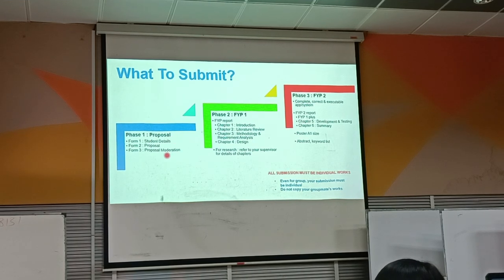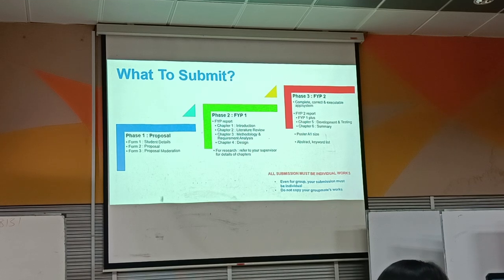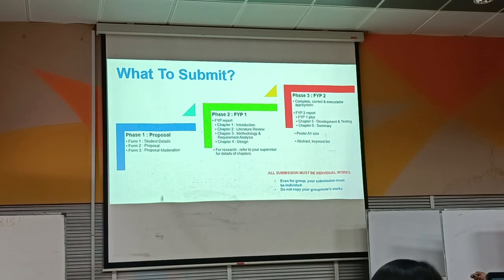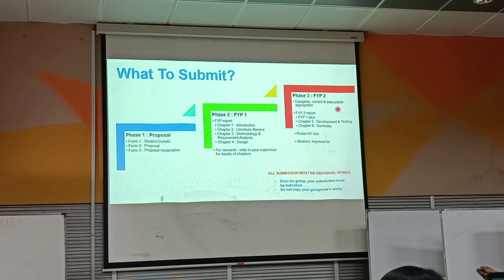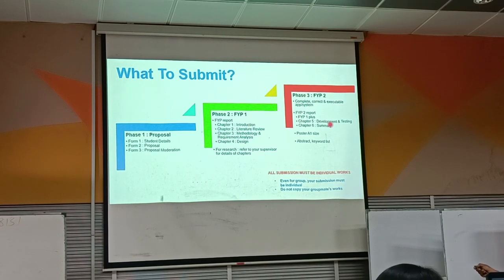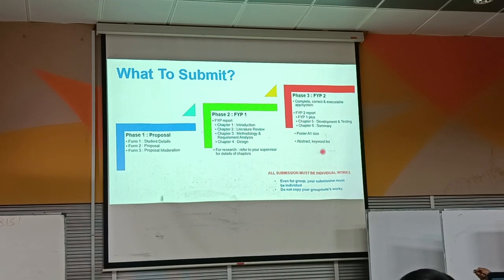For what to submit: phase one requires Form 1 (student details), Form 2 (your proposal), and Form 3 (proposal moderation form). Phase two requires the FYP report chapters one to four. Phase three requires the complete system, the FYP 2 report (which is FYP 1 report plus two or three more chapters depending on your supervisor), one poster, and an abstract with keyword list document. All documents are individually submitted even if you do group work — do not copy your groupmates' report.